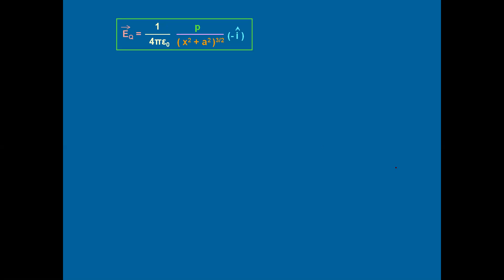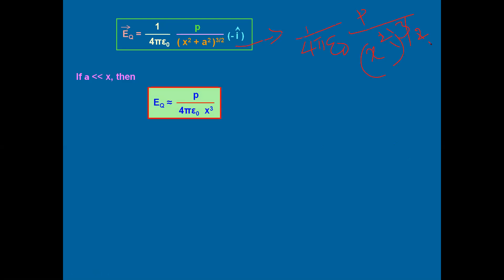An ideal dipole is one where a is very very small compared to x. So in the denominator, we can neglect a², and it becomes (1/4πε₀) · p / (x²)^(3/2). Since x² raised to 3/2 gives x³, the equation simplifies to Eq = (1/4πε₀) · p / x³. This is the equation for electric field due to an electric dipole at the equatorial point for an ideal (short) dipole.